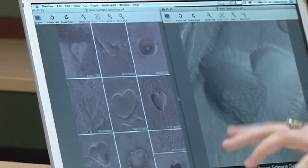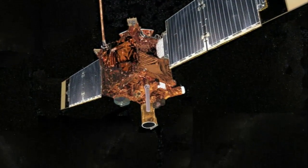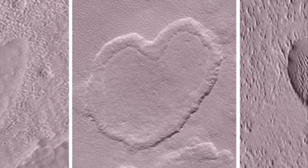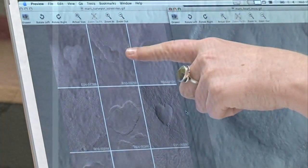You might not think it, but on the surface of Mars we've actually found quite a few hearts. These are various images that were taken from the Mars Global Surveyor on the surface. In each of these you can actually see clearly the shape of a heart. Most of them are dips, so they're actually depressions in the surface.